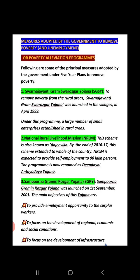Third is Sampoorna Grameen Rozgar Yojana, meaning Full Village Employment Policy — whoever is in the village will get full employment. This Yojana was launched on 1st September 2001 with the objective of providing employment opportunities to surplus workers. It also focused on the development of regional economic and social conditions, as well as infrastructure development.